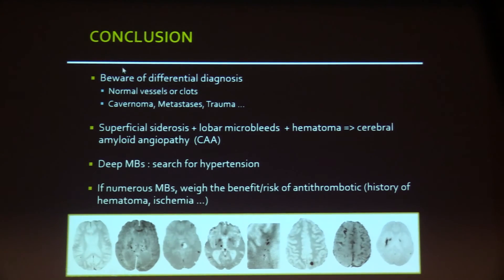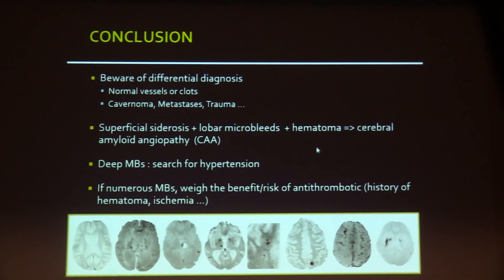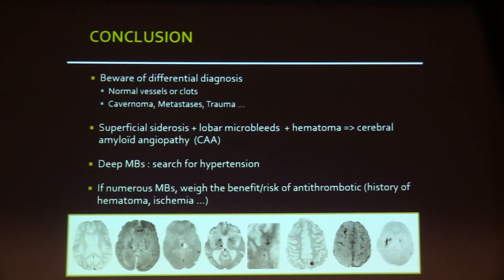In conclusion: beware of the many differential diagnoses — normal vessels can be tricky, as can cavernoma, metastases, and trauma. If there is superficial siderosis, lobar microbleeds, and lobar hematoma, think about cerebral amyloid angiopathy. If microbleeds are deeply located, search for hypertension. If there are many microbleeds, the neurologist should weigh the benefit-risk of antithrombotics versus the risk of bleeding. Thank you.